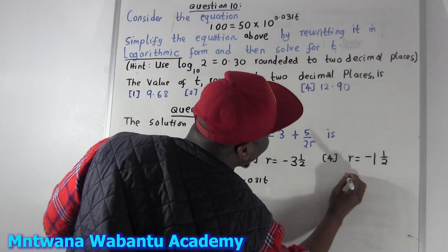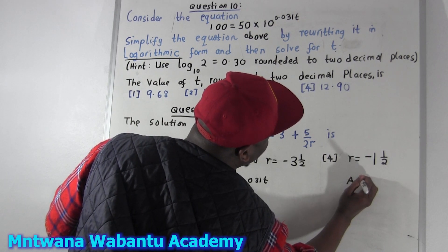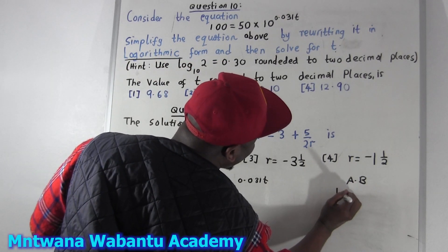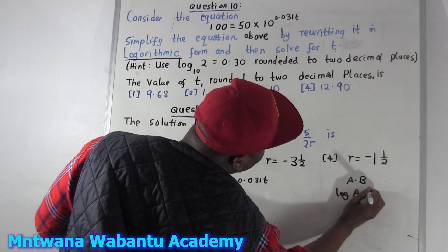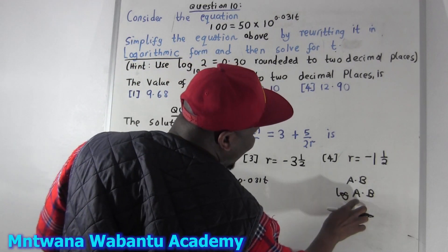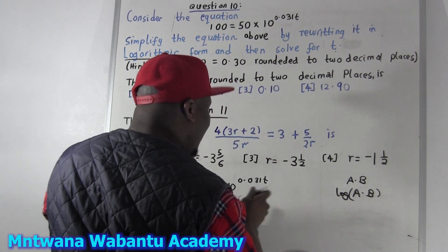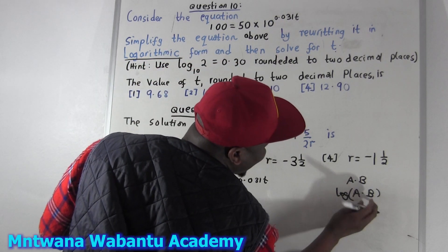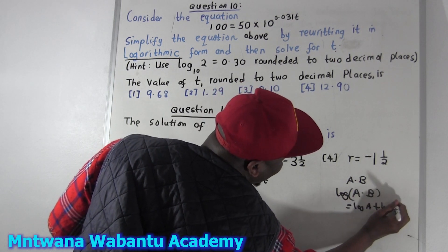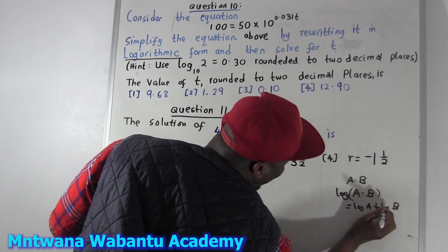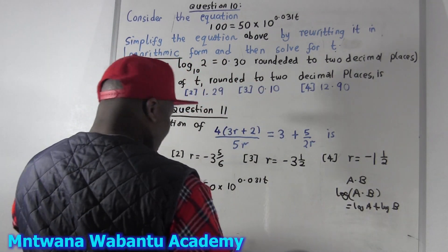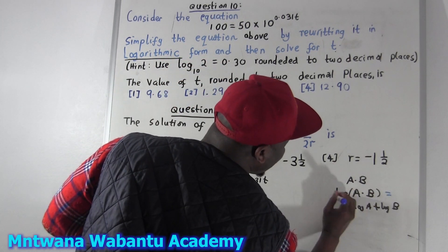If you have log of a times b, you can separate it. Log of a times b equals log of a plus log of b. If there's a multiplication, you can separate them. So these two forms are equal to each other.